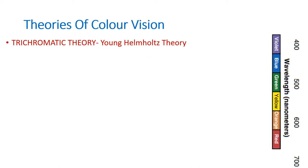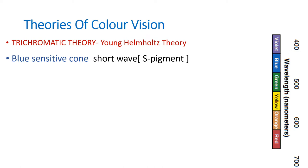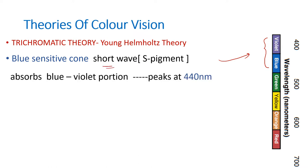The first type of cone is the blue-sensitive cone, maximally sensitive to the blue region of the electromagnetic spectrum. Because the blue region has a short wavelength, these are called S cones, containing S pigment. Their maximum absorption is around 440 nanometers.